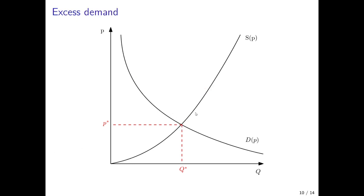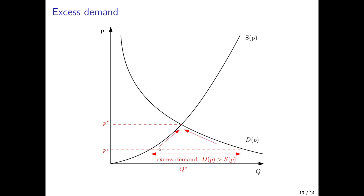A similar argument holds in the opposite direction if we have excess demand. Excess demand materializes if the price is so low — for whatever reason such as price regulation — that consumers demand a very high quantity but suppliers are not willing to supply that much. In this case there would be an upward pressure on the price. If the price increases, firms want to supply more and households demand less, but until the economy reaches equilibrium where supply equals demand, these pressures continue pushing the economy towards equilibrium.